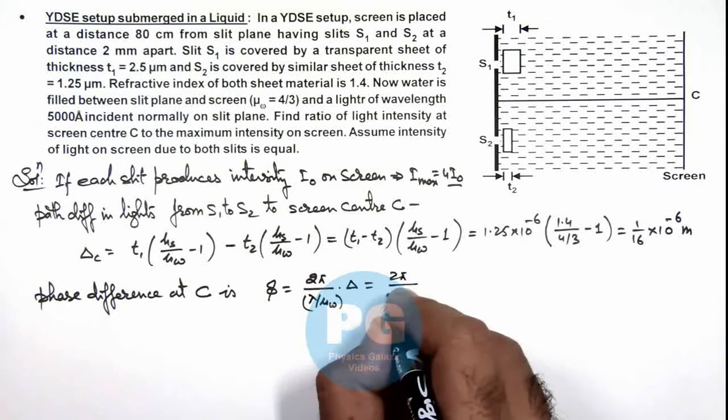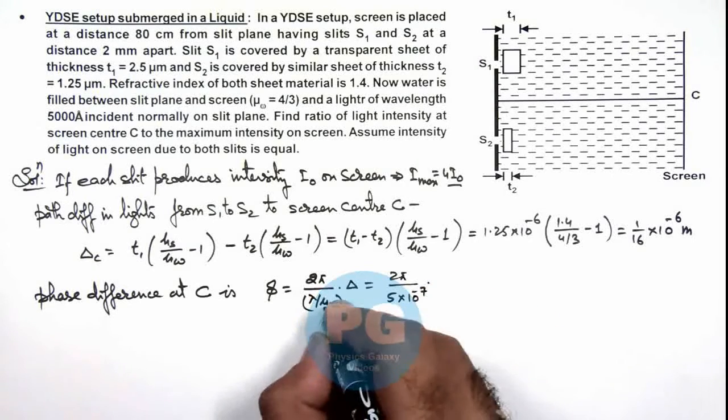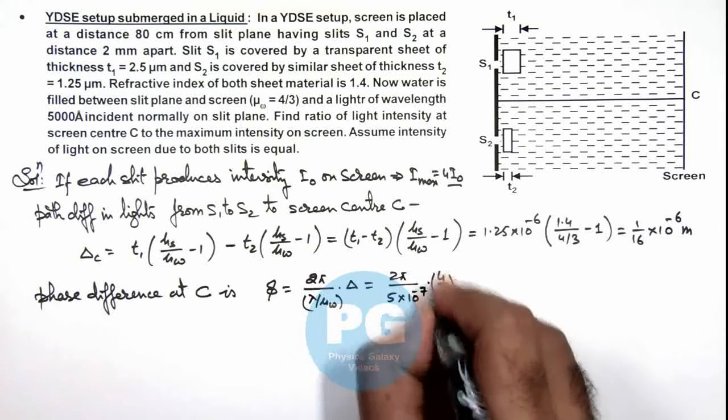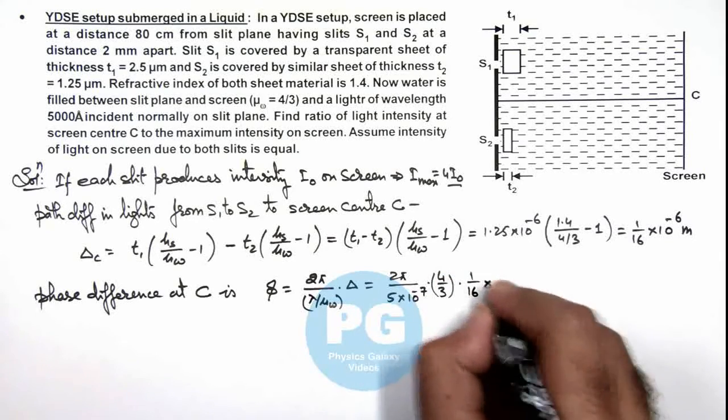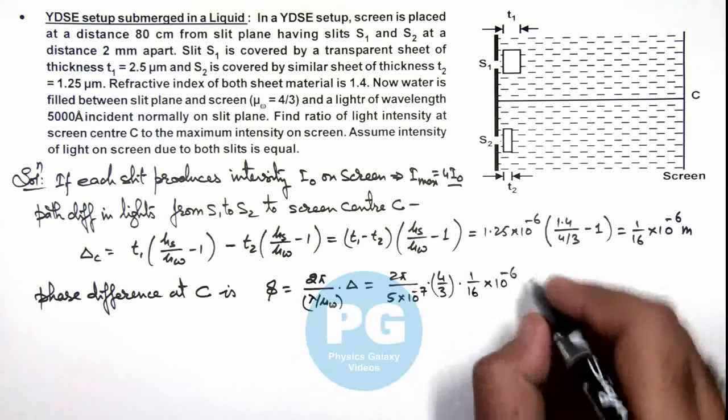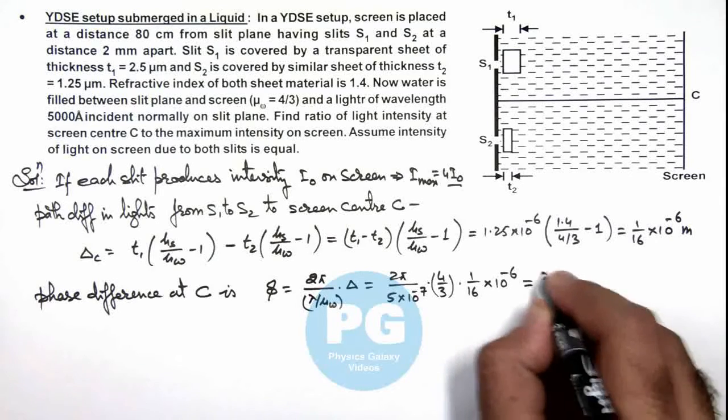λ is 5 × 10⁻⁷ multiplied by μ of water which we can write as 4/3, multiplied by Δ here is 1/16 × 10⁻⁶. So solving these values here, we can see the numerical phase difference we are getting is π/3.